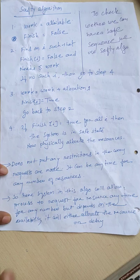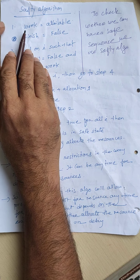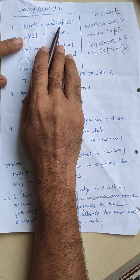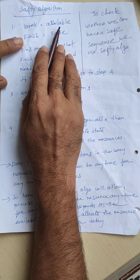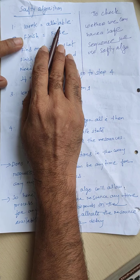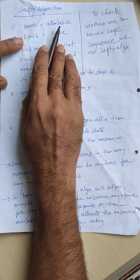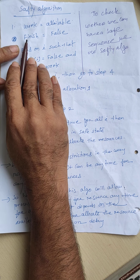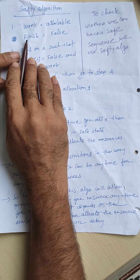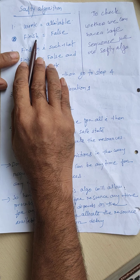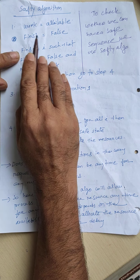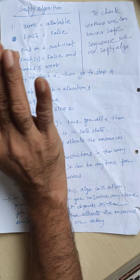Safety algorithm uses a variable called work, which is initialized with available. Available is a variable used by Banker's — it represents the total number of available instances of a resource. The second variable used by the safety algorithm is finish, and it is initialized to false for all the processes.